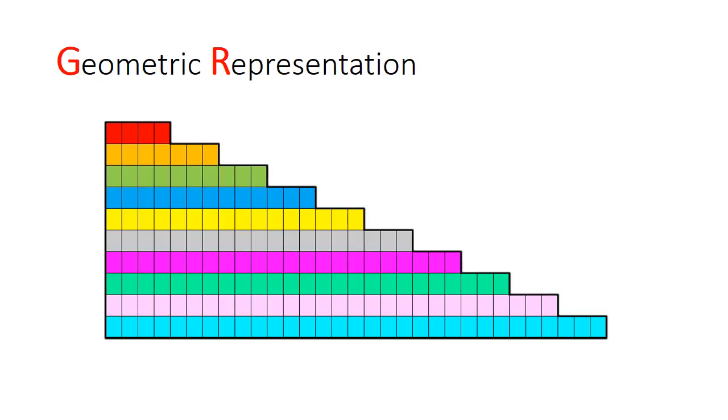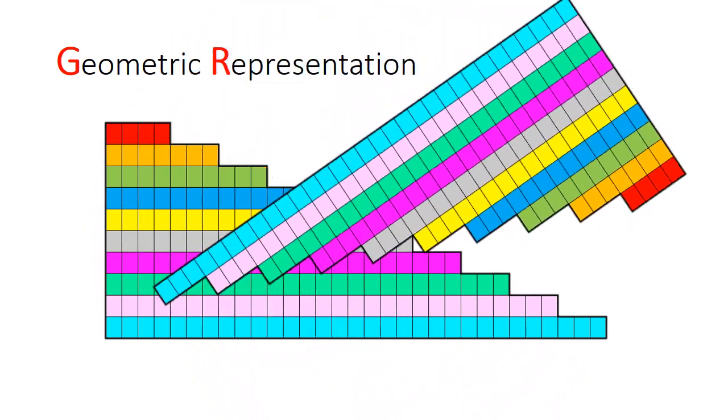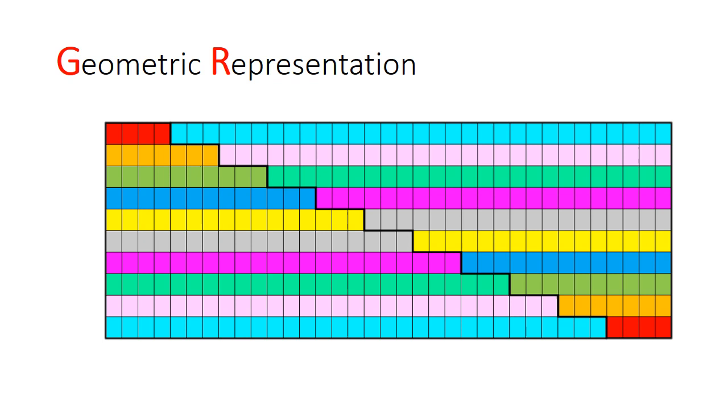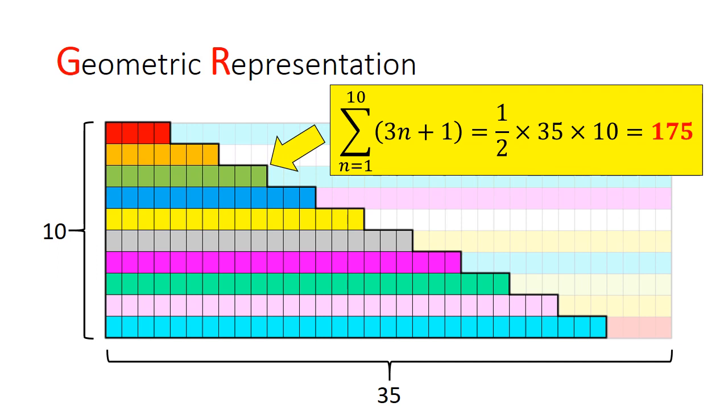We can picture this problem geometrically. Finding the sum of those 10 numbers can be equated to finding the area of this stack of boxes. What we do is duplicate another stack of boxes and rotate it around. The sum would be half of this rectangle's area. Since the rectangle has a base of 35 and a height of 10, we get a result of 175.